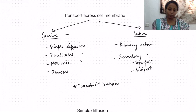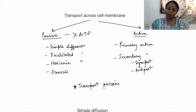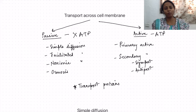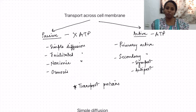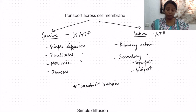Passive transport processes do not require ATP while active transport processes require ATP. Why? Because all passive transport processes occur from higher concentration to lower concentration — downhill transport. For example, sodium will move from its higher concentration to its lower concentration. Active transport, on the other hand, is against the concentration gradient, that is uphill transport.